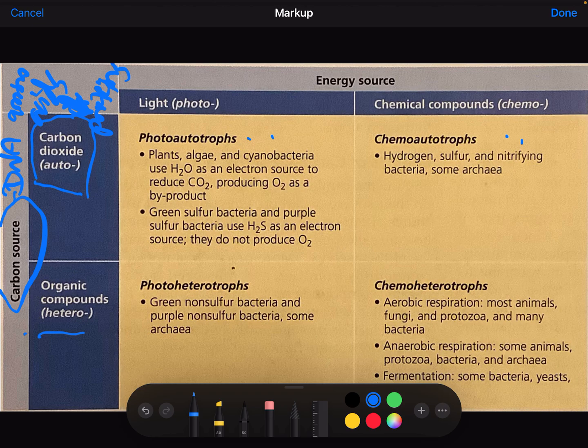These are organisms that take in carbon dioxide from their surroundings, from the atmosphere usually, and they will use that carbon and those carbon atoms and incorporate them into molecules like glucose.